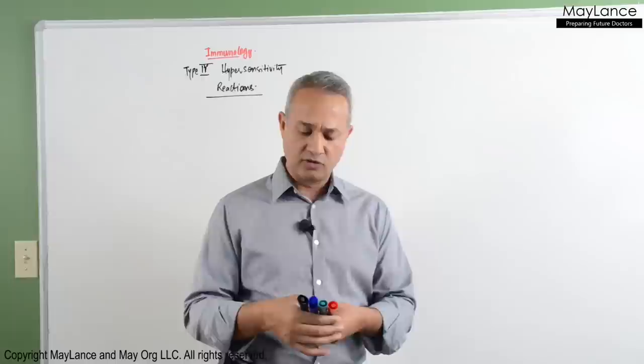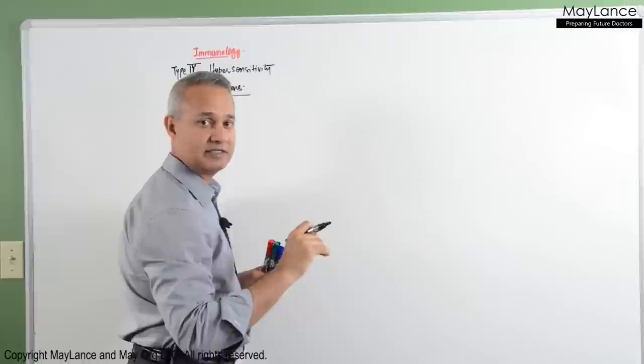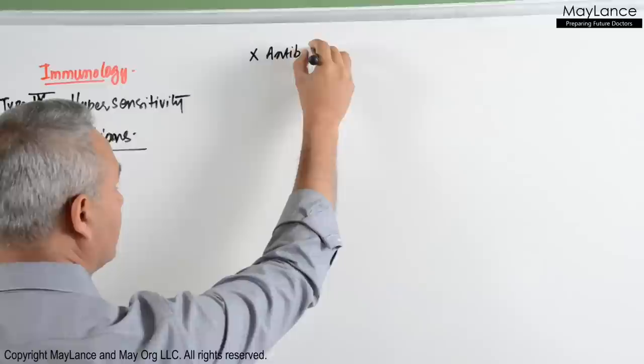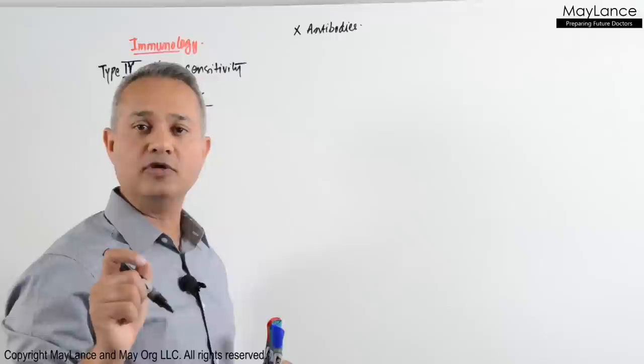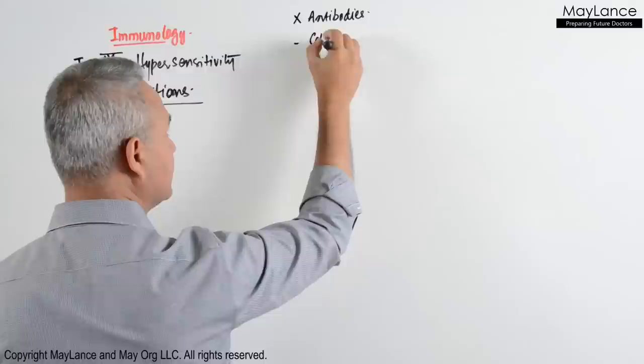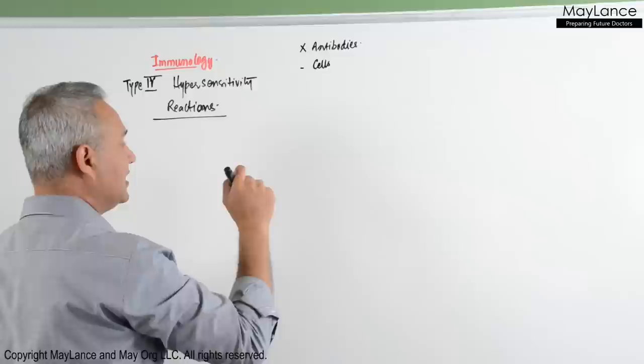Some characteristics of the type 4 hypersensitivity reaction: the most important one is no antibodies. Types 1, 2, and 3 involve antibodies or immunoglobulins. Type 4 does not have antibodies; rather, cells are involved — that is why it is also called cellular hypersensitivity.